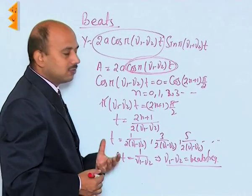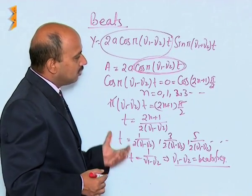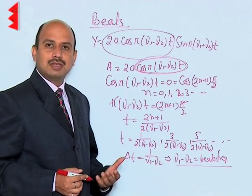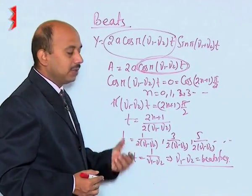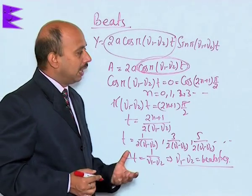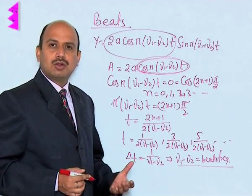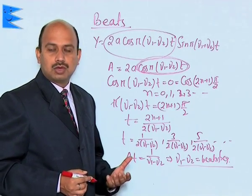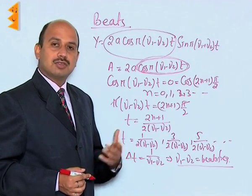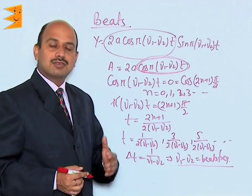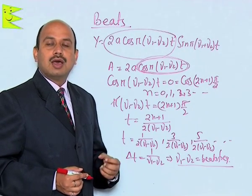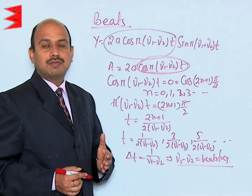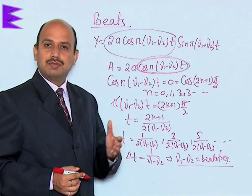In this phenomenon there is an alternate variation in the intensities of sound when two waves are superimposing, traveling in the same direction with almost the same frequencies. This phenomenon is known as beats, also called waxing and waning. Using this concept, we can find the frequency of an unknown tuning fork: if two tuning forks are sounded together and wax is put on their prongs, by observing that phenomenon we can calculate the frequency of the unknown tuning fork.